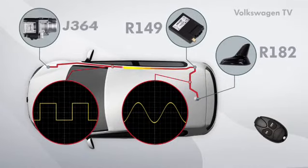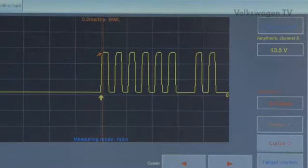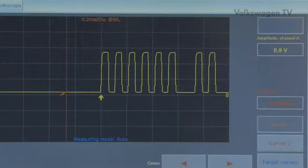It transfers the message via pin 2 to the J364 control unit for the auxiliary heater. The signal has a high level of about 13 volts and a low level of about 1 volt.